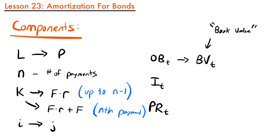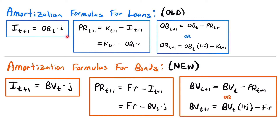Finally, capital I sub T — the interest accumulated at a particular time — and capital PR sub T — the principal at a particular time T — are going to be exactly the same as they were for the loan repayment amortization method. They will not change for bonds; we use the exact same notation and they are calculated the same way. Now that we've gone over all the components, let's look at the formulas we will use for the amortization of bonds.